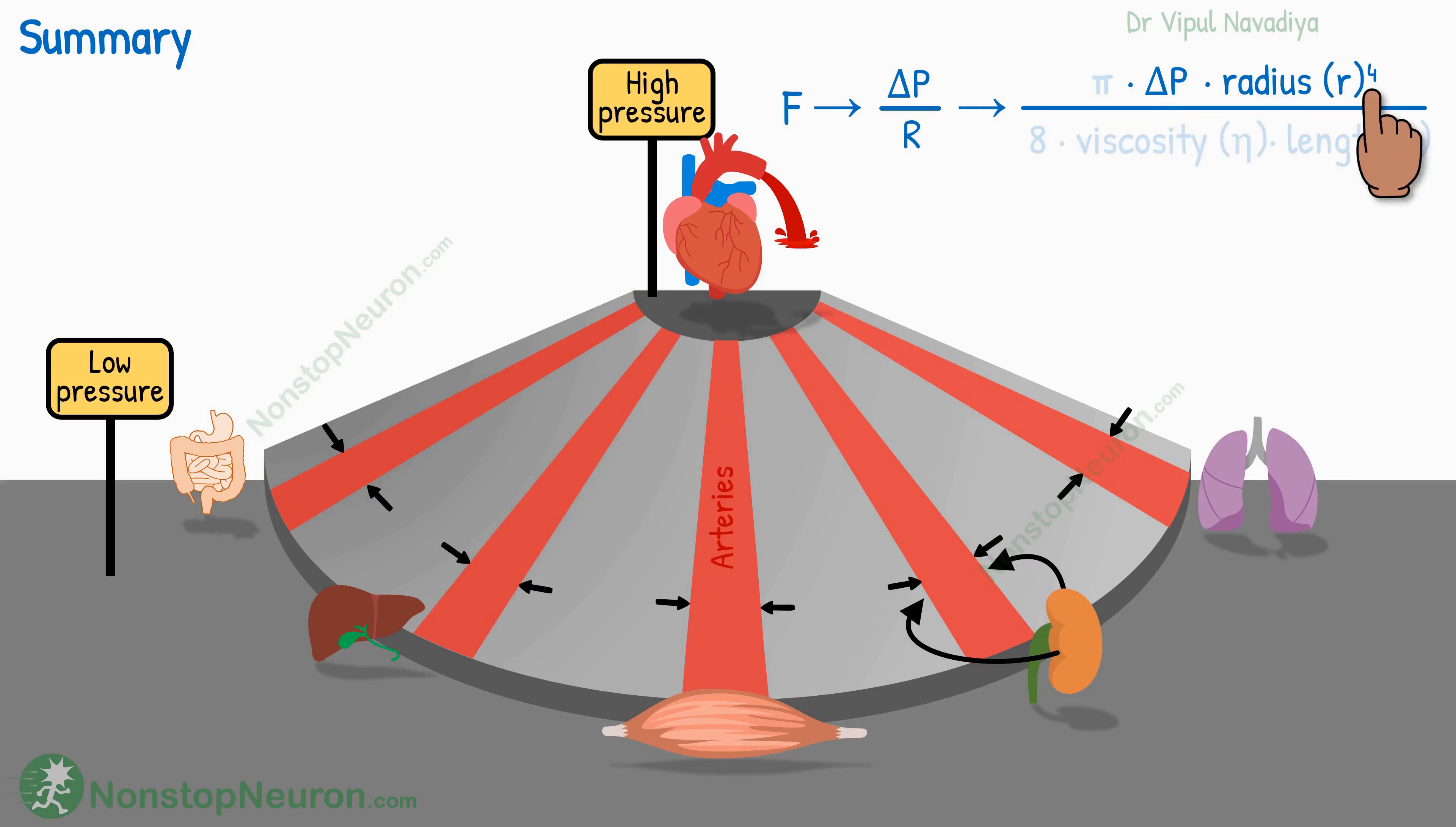As flow is proportional to the fourth power of the radius, even a small change in radius can produce large changes in the flow. And obviously, to change the radius, the vessels are constricted or dilated as needed. This allows the regulation of blood flow at individual organs.